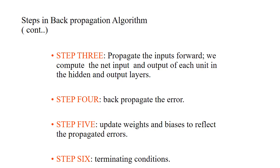Step 4 is to back propagate the error. At the output you assess how much error has been encountered, then go back and reduce this error by updating the weights in Step 5. Step 5 is to update weights and biases to reflect the back-propagated error. Step 6 is the terminating condition.